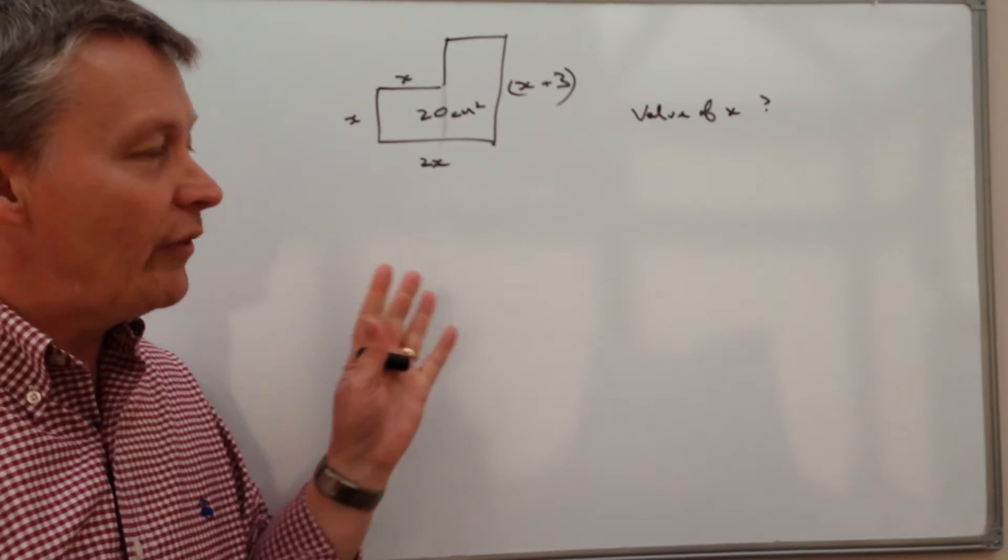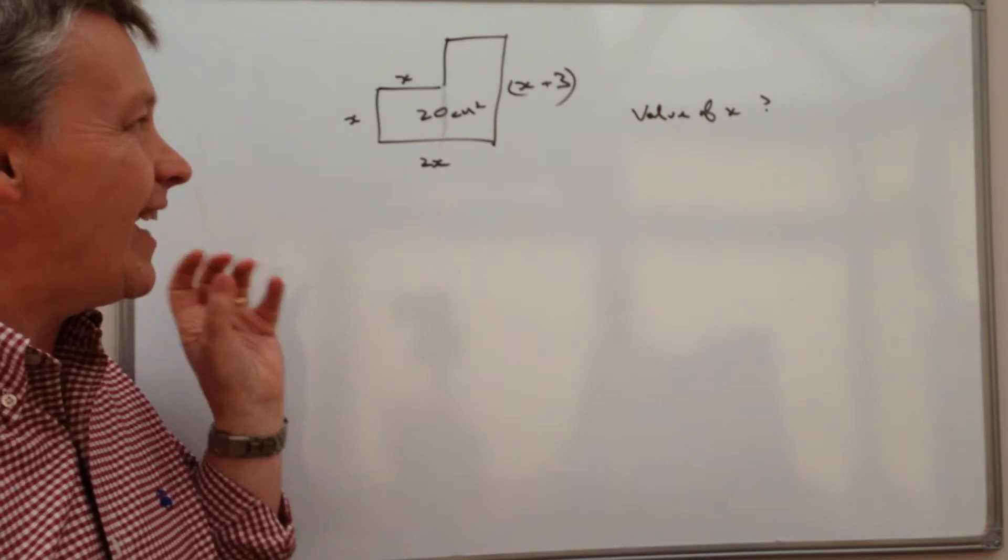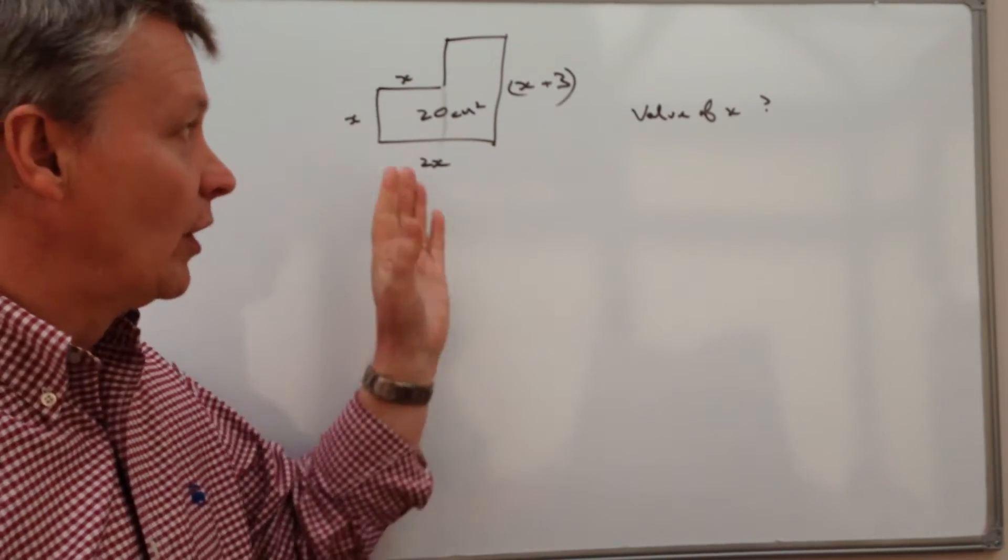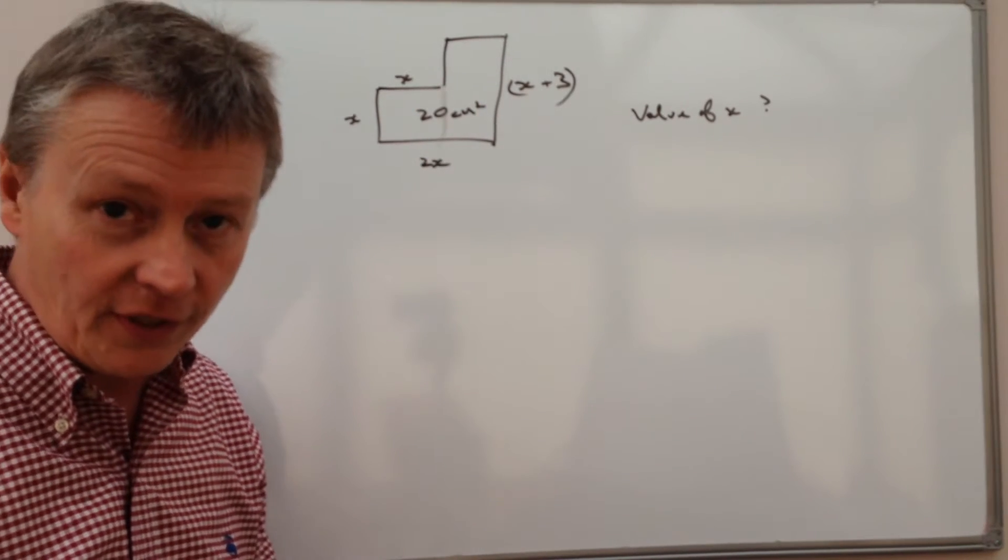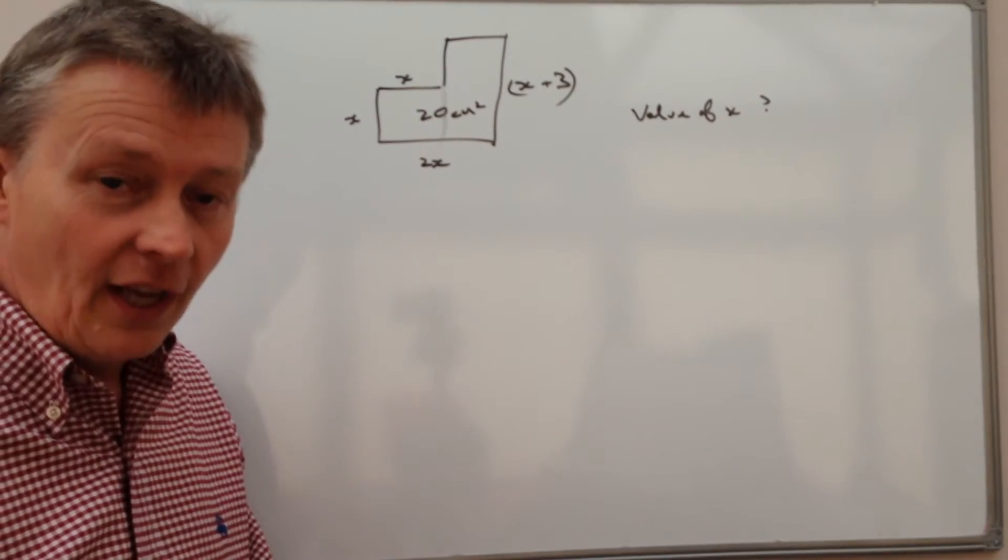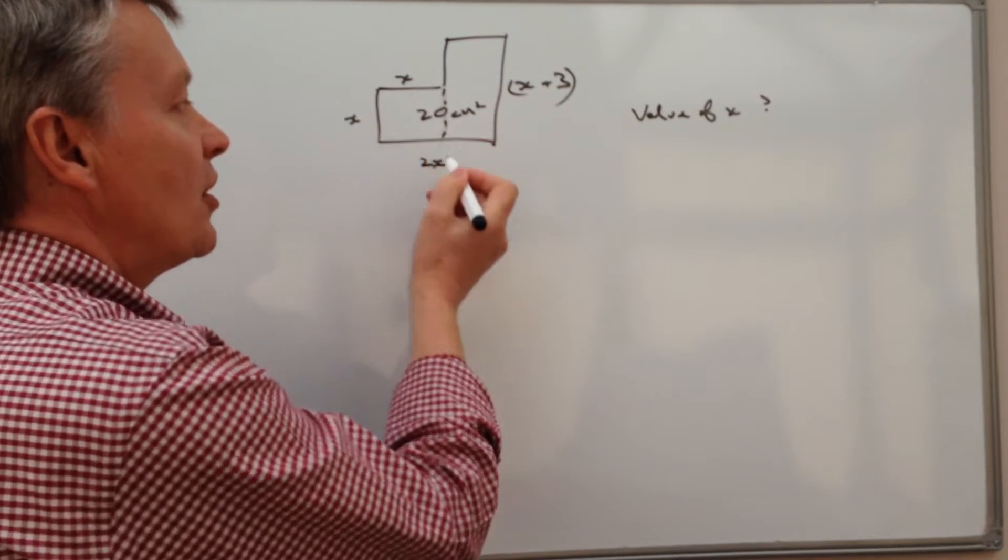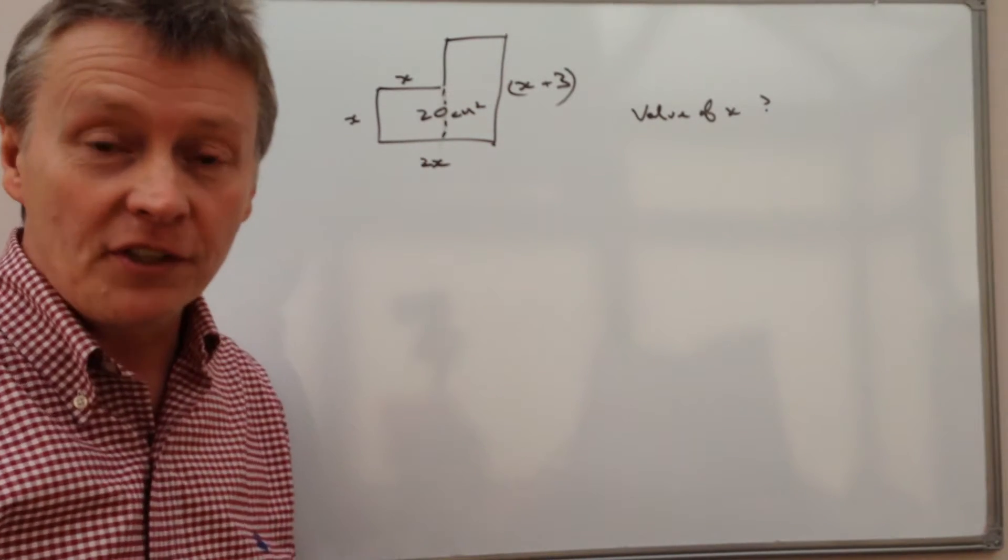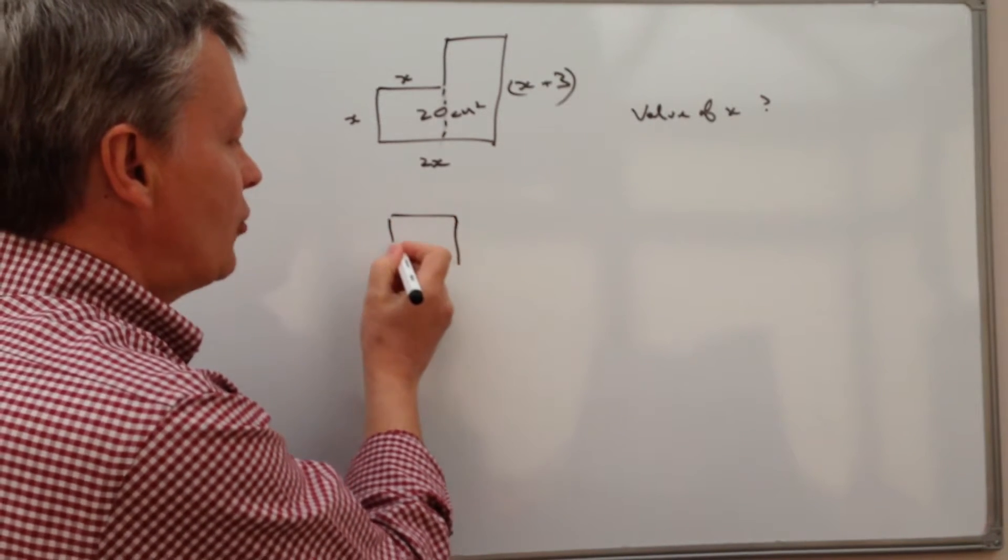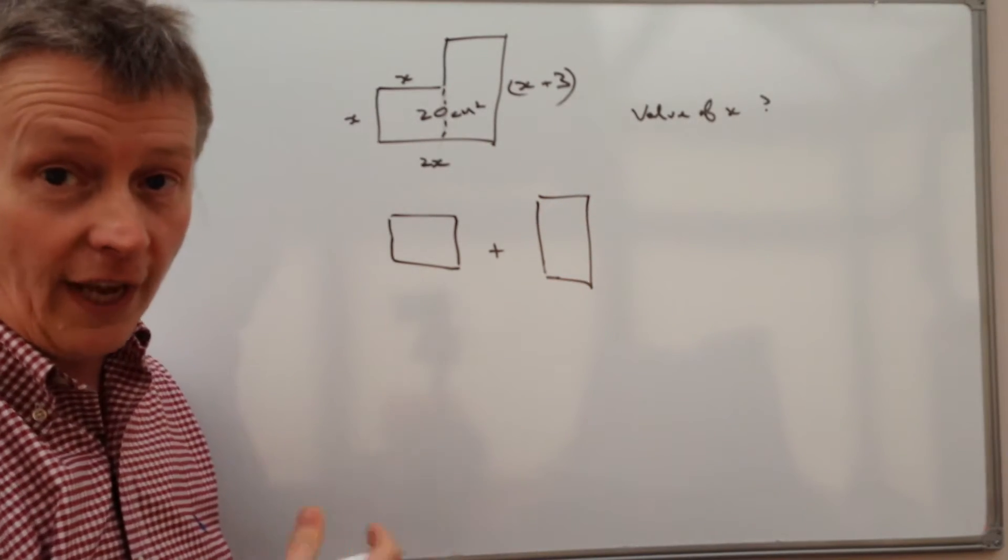Well, with this really what we're doing is we're trying to find a way to create an equation that will allow us to isolate x and work out its value using the information that we've got here. So when you're dealing with an area with an irregular shape the easiest way is actually just to break it down into two separate shapes, two or three separate shapes and treat each of them individually and add them together to get the overall area.